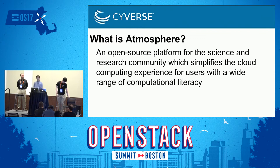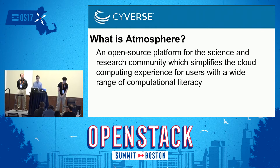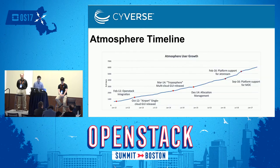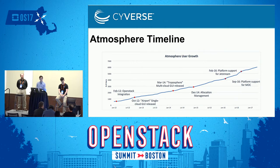Atmosphere is an open-source platform for the science and research community which simplifies the cloud computing experience for users with a wide range of computational literacy. We did this by creating a straightforward user interface and a robust REST API that allows users to view their cloud resources, collaborate with others, and focus on the science. Since releasing OpenStack integration in 2012, we've continued to see steady user growth. Over the last five years, Atmosphere's user base has increased from 600 to over 6,000 users, and Atmosphere has transitioned from a single cloud to a multi-cloud interface. In 2016, we allowed Atmosphere to become a platform that can be self-hosted by other sites like the Massachusetts Open Cloud.